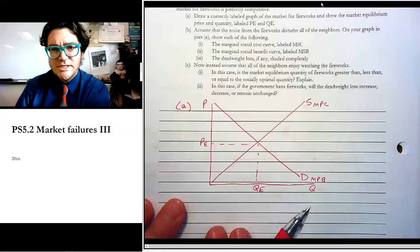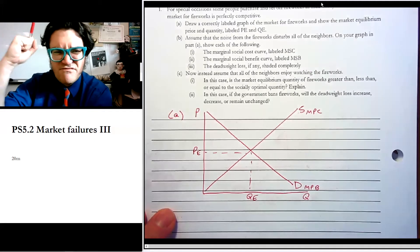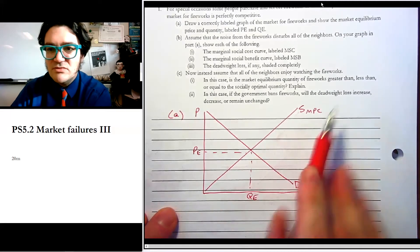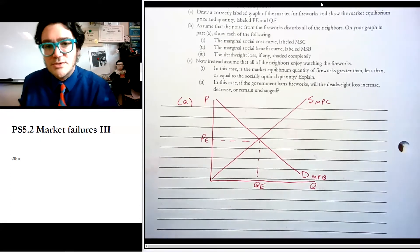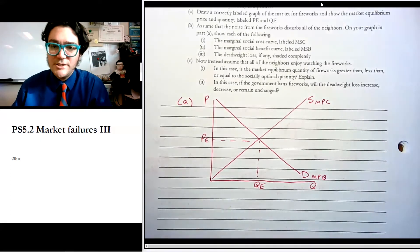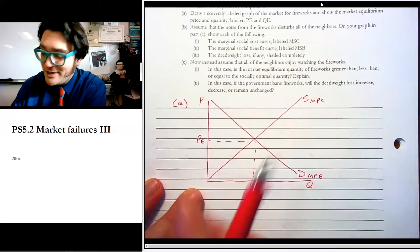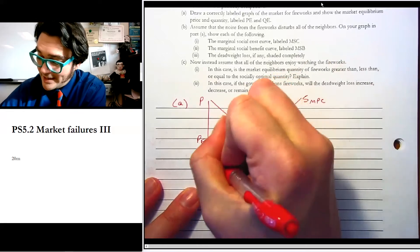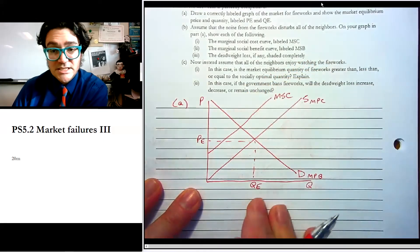Assume that the noise from the fireworks disturbs all of the neighbors. Fireworks. I hate fun. On your graph in part A, show each of the following: marginal social costs, marginal social benefit, deadweight loss, if any, shaded completely. So if there's an external cost because the neighbors are angry, then we know that there's going to be a higher supply curve way up here, MSC.